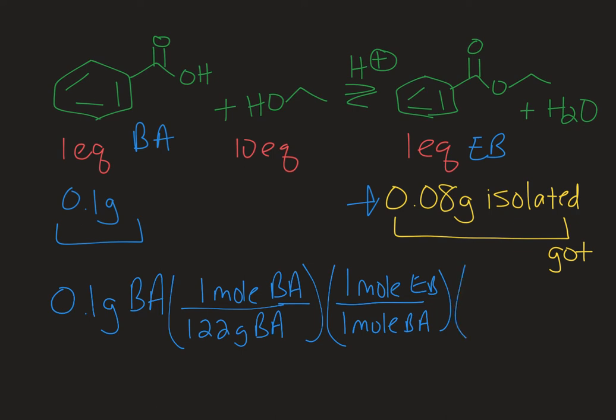And then of course when we isolate our product we would weigh it in grams, right? So I'm gonna go through the molar mass of ethyl benzoate so that I can get a grams number here. So for every one mole of ethyl benzoate there's 150 grams of ethyl benzoate.